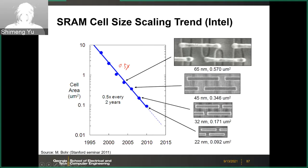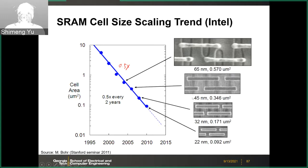At 65nm, using only single patterning, you can see some roughness in the gate pattern. At 45nm, the industry switched to double patterning, which helps maintain the rectangular shape of the gate area. At 32nm and 22nm, you see very regular predictable patterns, and the location of the transistors is always consistent.